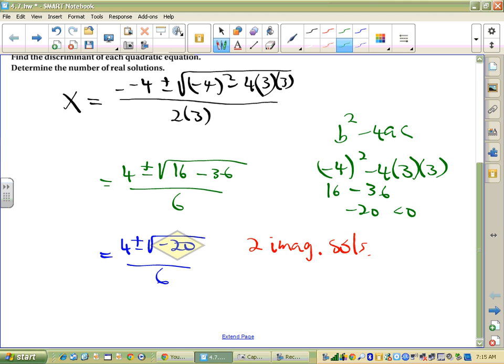Since the discriminant, the stuff under the square root, since the discriminant is negative, there are two imaginary solutions.